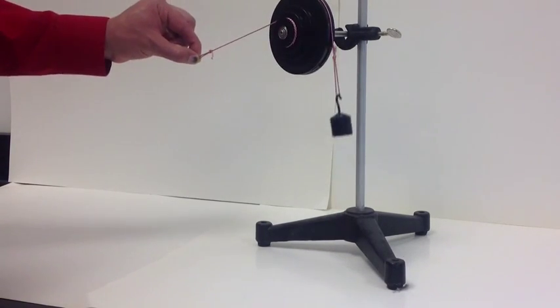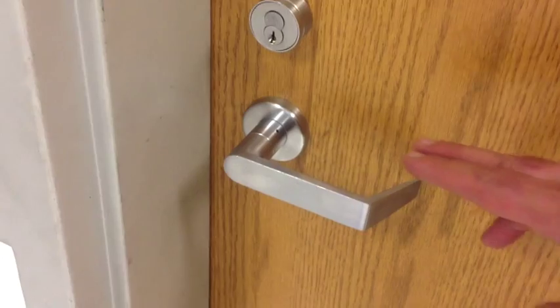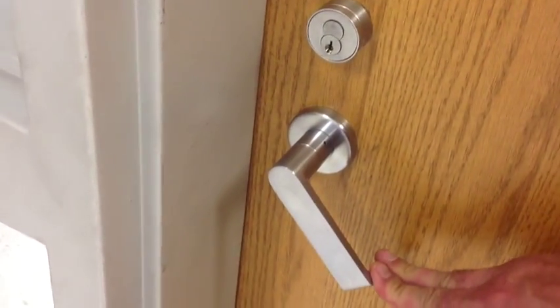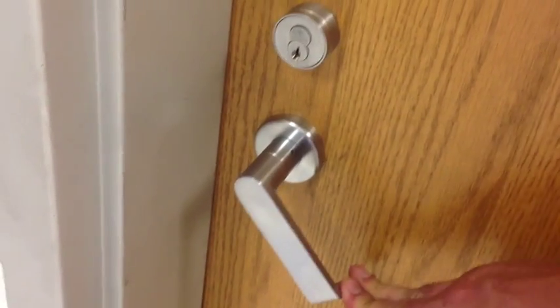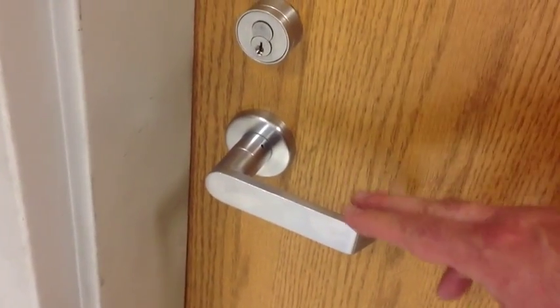And now some examples. Any door knob is a force multiplier. You apply the input force at the large diameter, and the output force is applied at the shaft inside the door to pull that latch open.